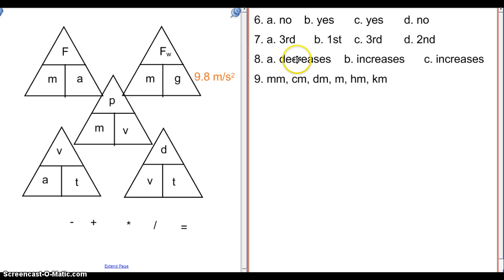For number eight, as the distance between objects increases, the force will decrease. This one is an increase, and then we have an increase here. For number nine, there are a couple of these that we didn't look at. Decimeters fall between centimeters and meters, and hectometers fall between meters and kilometers, so hectometers are a little bit bigger.